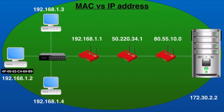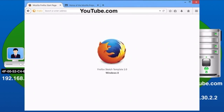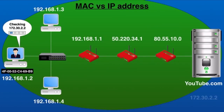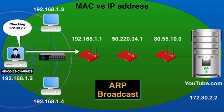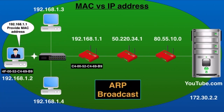Once device B tells its MAC address to device A, communication can be started between them. Now, what happens if two devices are on a different network? This is where the IP address comes into play. Suppose you want to open YouTube — to get to YouTube you need the MAC address of YouTube's server, but you don't know what it is. So you type youtube.com in a web browser, and DNS converts youtube.com into an IP address so devices can understand it. The device checks YouTube's IP address and notices it's not on the local network, so it forwards the data packet to the default gateway or router. An ARP broadcast is sent asking for the MAC address of the router.